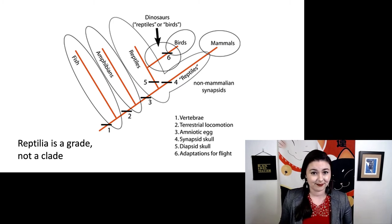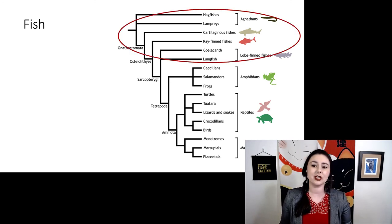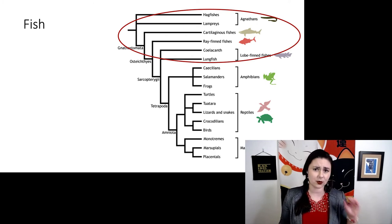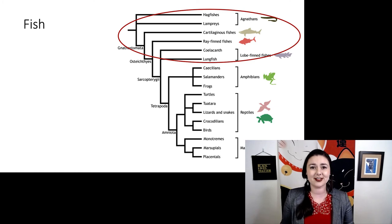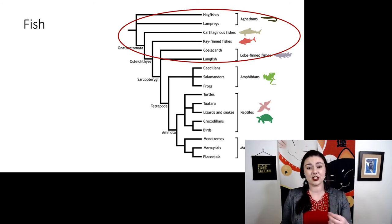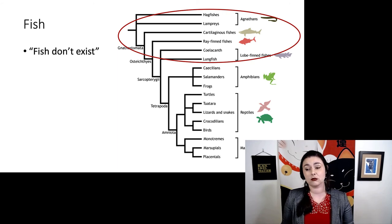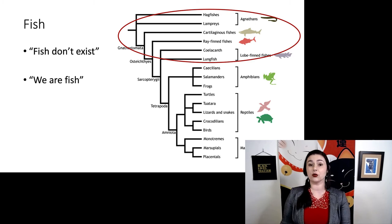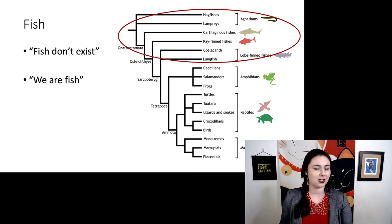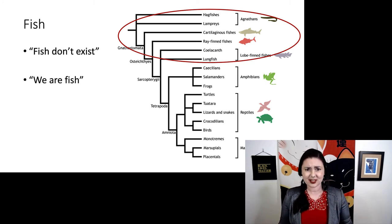Probably the worst example is fish. We have hagfishes, lampreys, cartilaginous fishes such as sharks, ray-finned fishes (most of what you think of as a fish), coelacanths and lungfish — those lobe-finned fishes with bones in their front fins that are like prototype limbs. But fish is very far from being monophyletic. We are grouping fish here on the fact that they aren't tetrapods. You could say fish don't exist, or that we are fish. Fish as a category is a grade and reflects a degree of evolutionary change and the fact that they are more primitive or plesiomorphic.